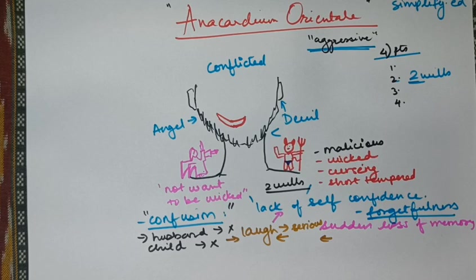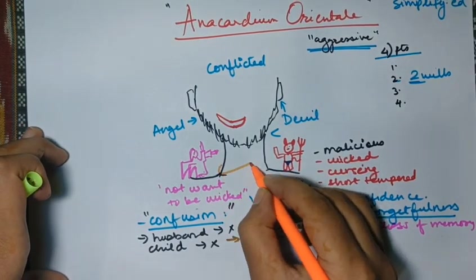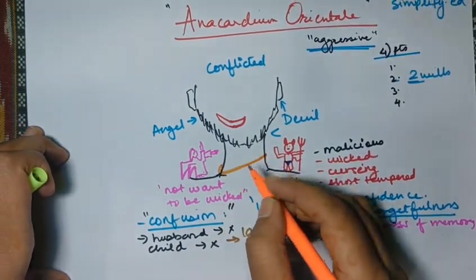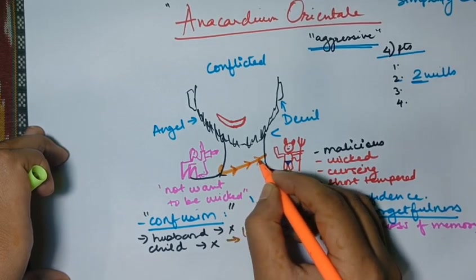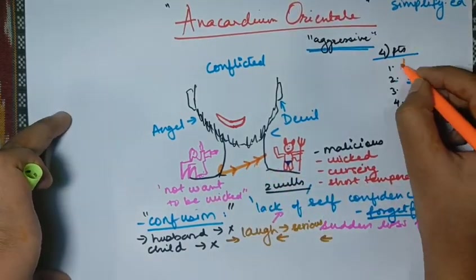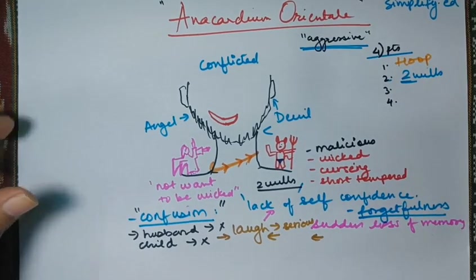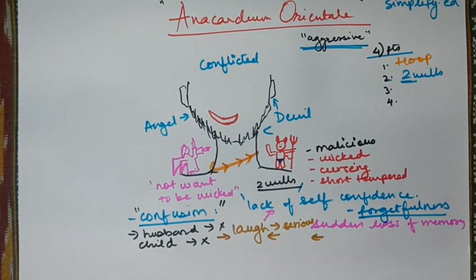Second thing is sensation of hoop or band around the neck. Okay, I would like to draw this. Around the neck, there is going to be a sensation. This is not Nike. This is a hoop. So like a hula hoop. So the person has a sensation of hoop around the neck.